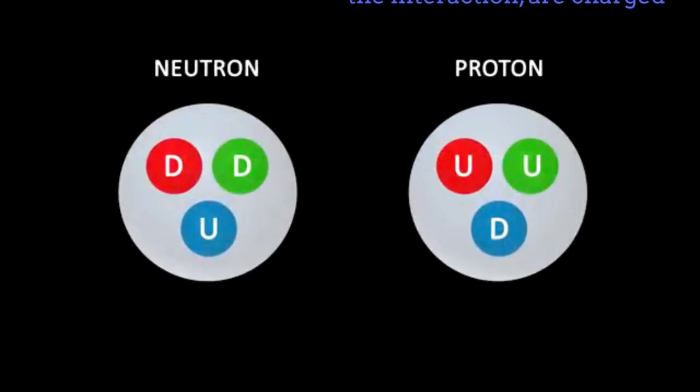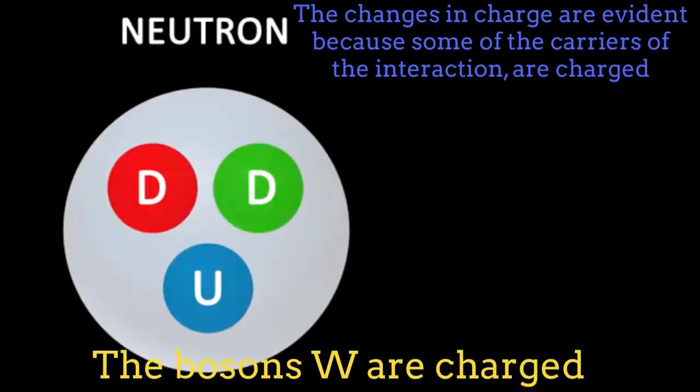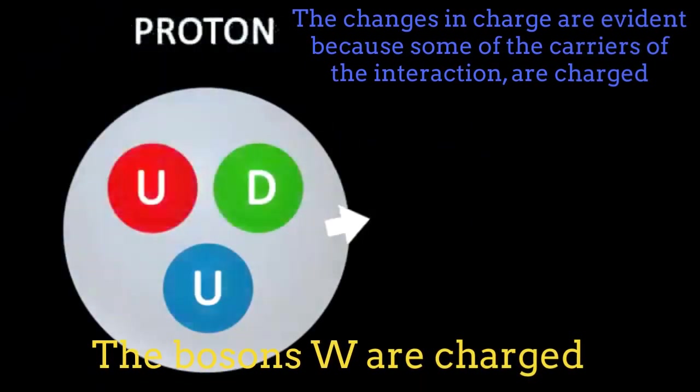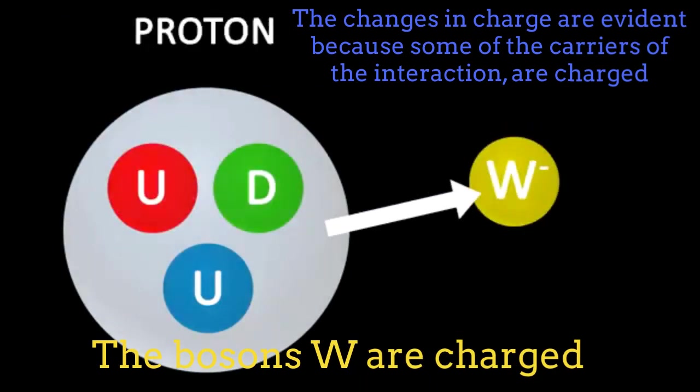The change in electric charge for the fermions under the weak interaction is a natural consequence of the fact that some of the carriers of the weak interaction, namely the bosons W, transport electric charge by themselves.